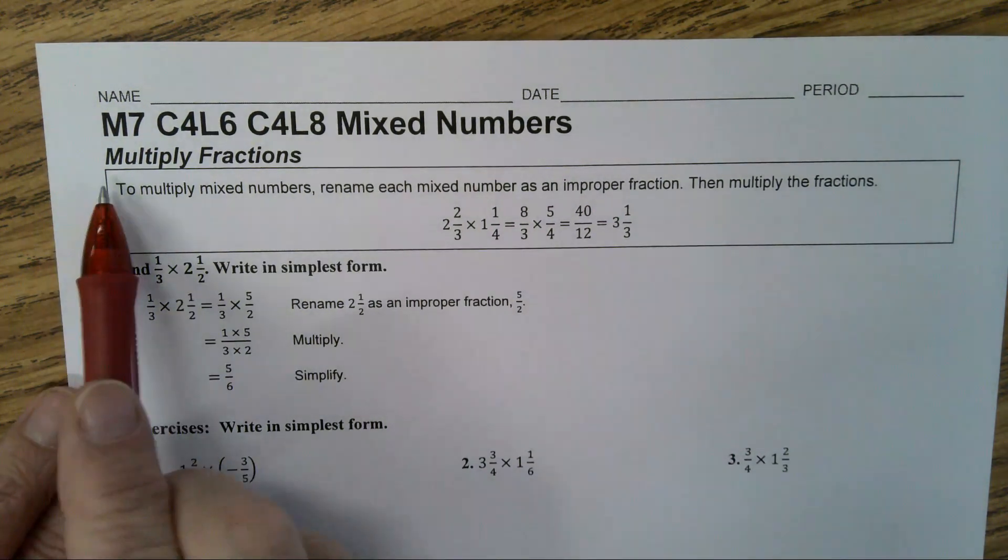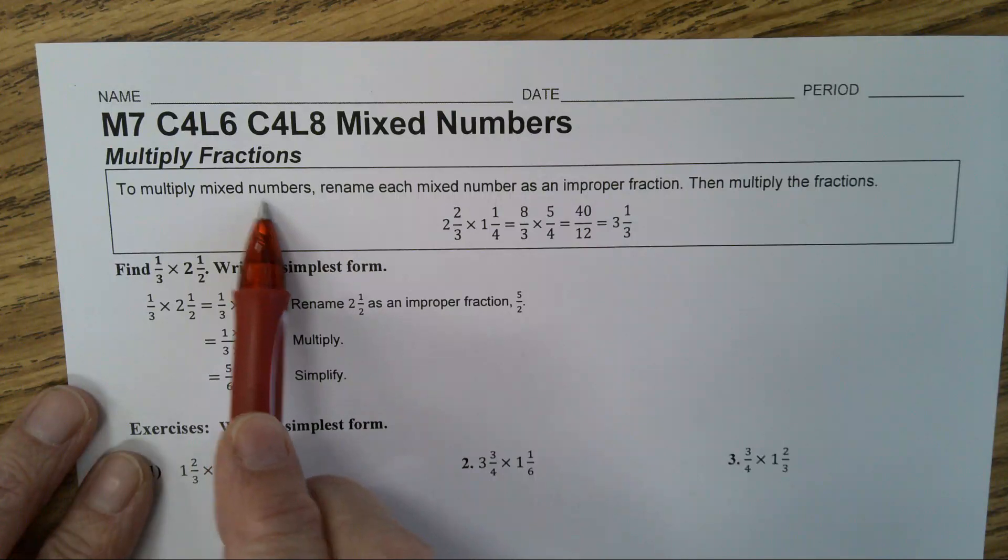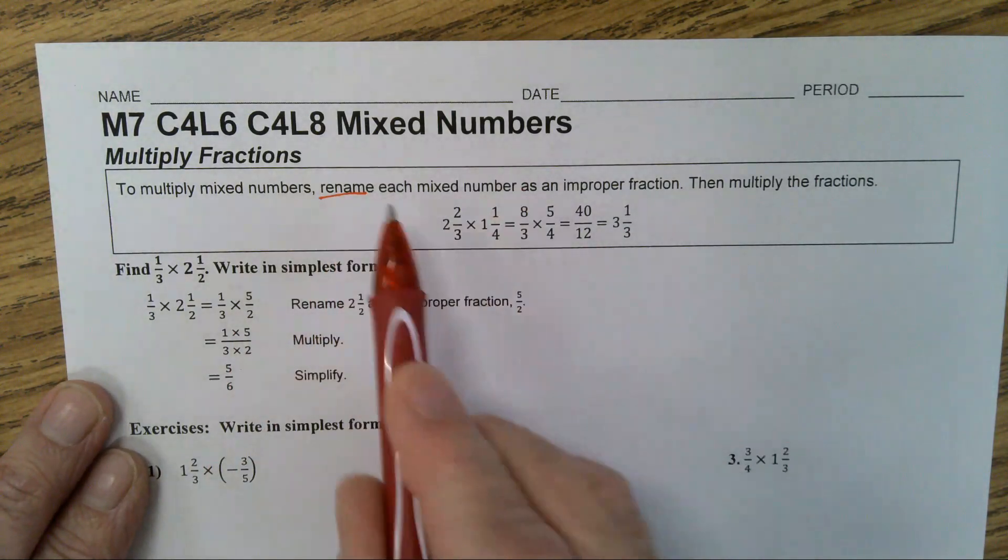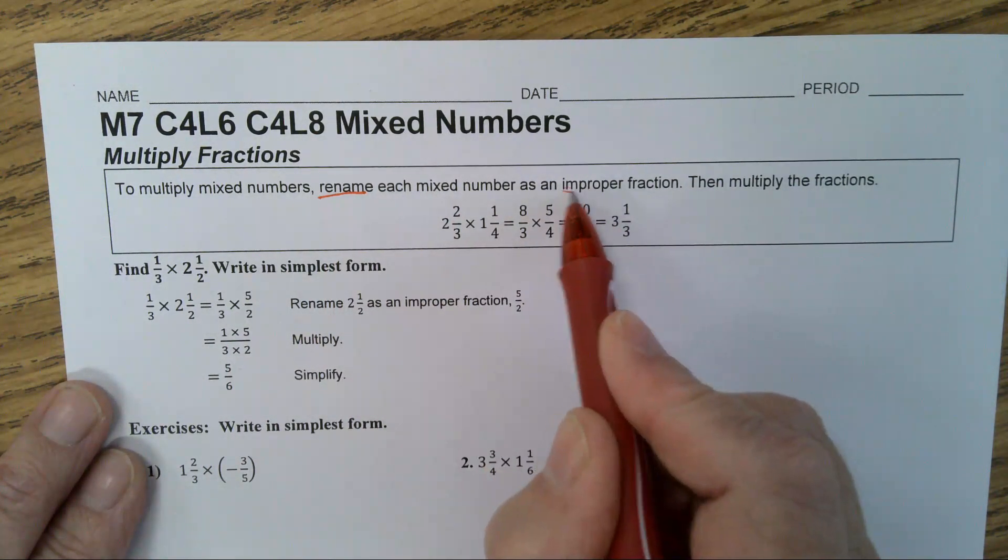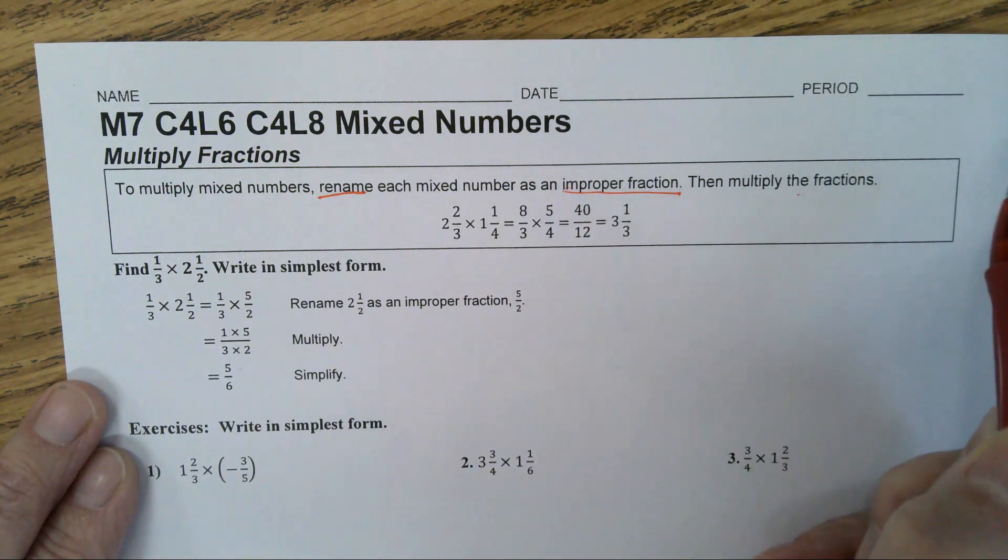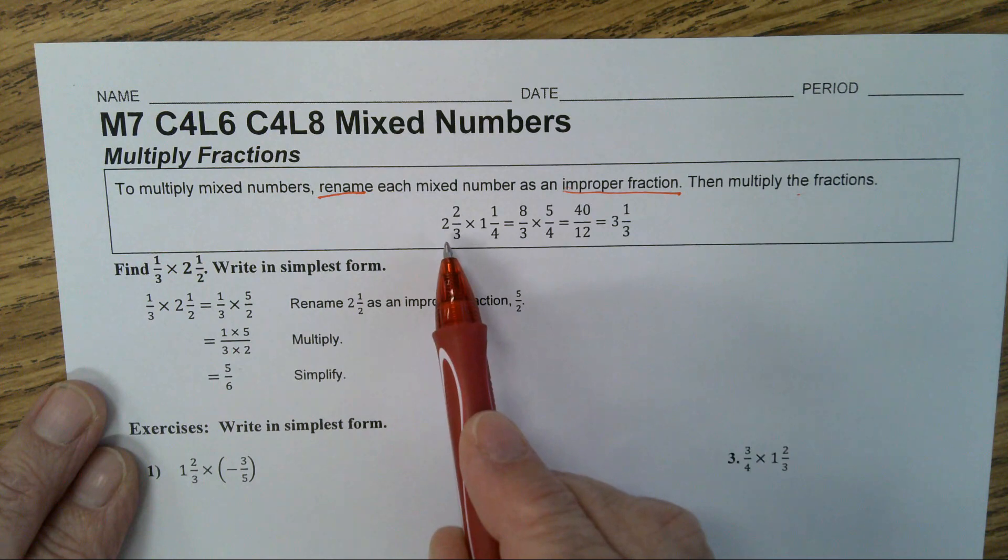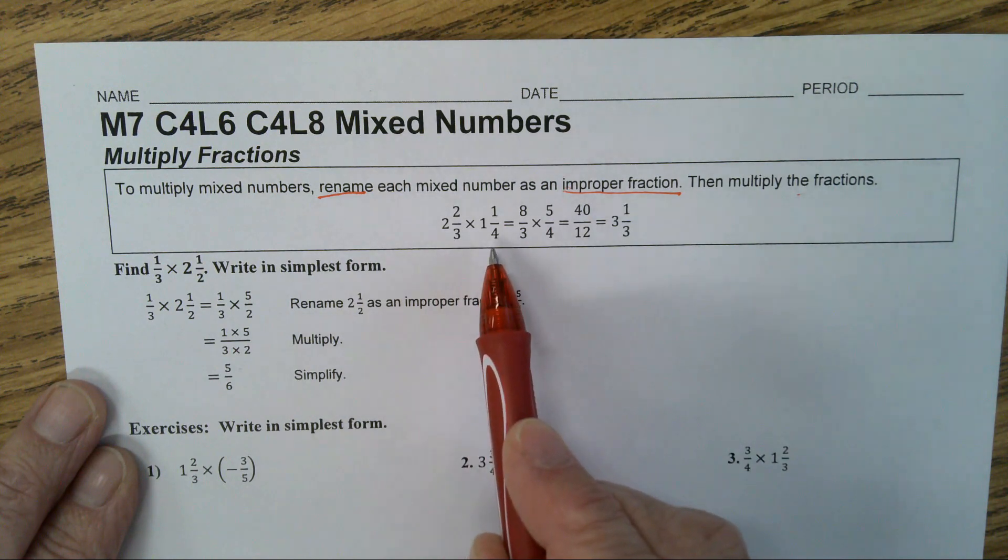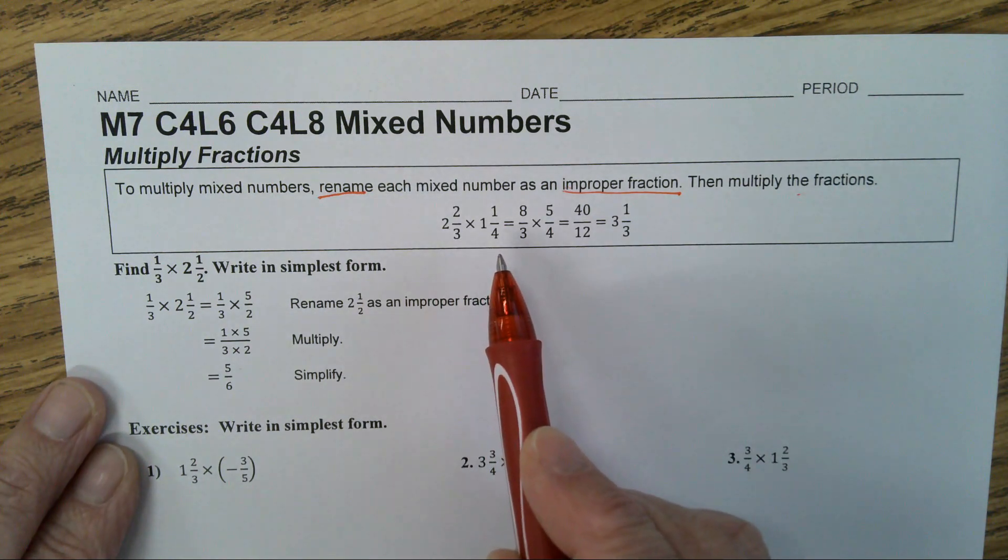Multiplying fractions. To multiply mixed numbers, you rename each mixed number as an improper fraction, then multiply the fractions. So here you have 2 and 2 thirds times 1 and 1 fourth. How do you change it to an improper fraction class?